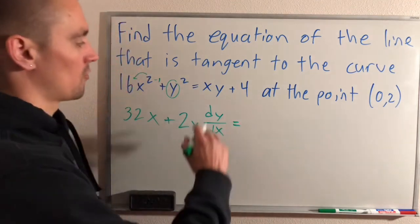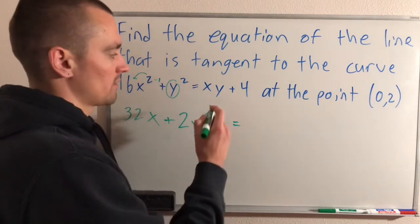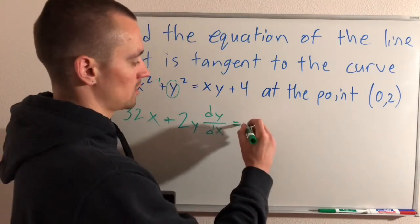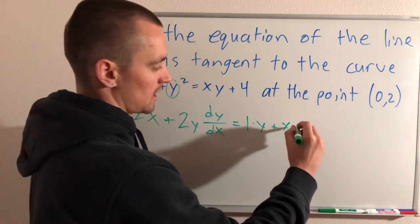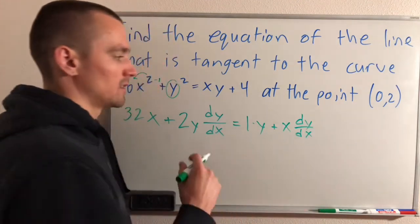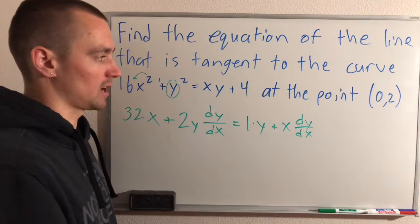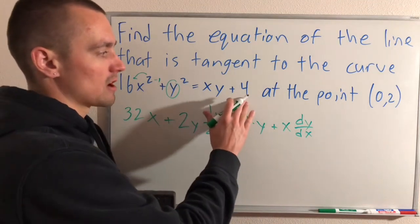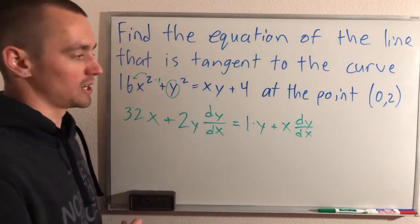Then for the derivative of xy, we need to use the product rule. The derivative of x is just going to be 1 times y plus x times the derivative of y, which again is just dy/dx because we're taking the derivative with respect to x and y has to be treated as a function of x. And then the derivative of a constant 4 is just going to be 0. So that's it for the implicit differentiation step.